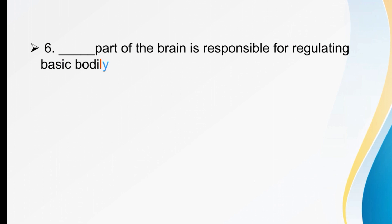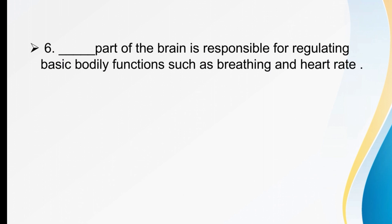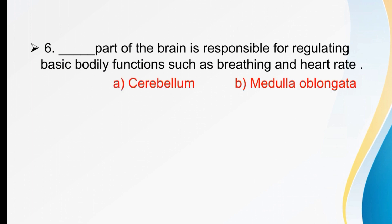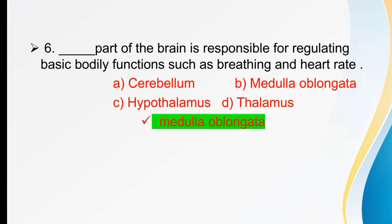The part of the brain responsible for regulating basic bodily functions such as breathing and heart rate is dash. Options are cerebellum, medulla oblongata, hypothalamus, or thalamus. The right option is medulla oblongata, which is responsible for breathing and heart rate.